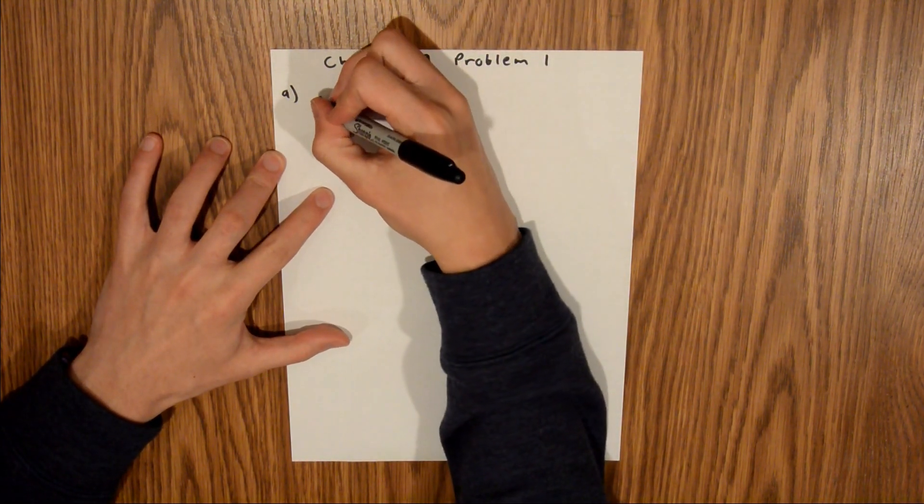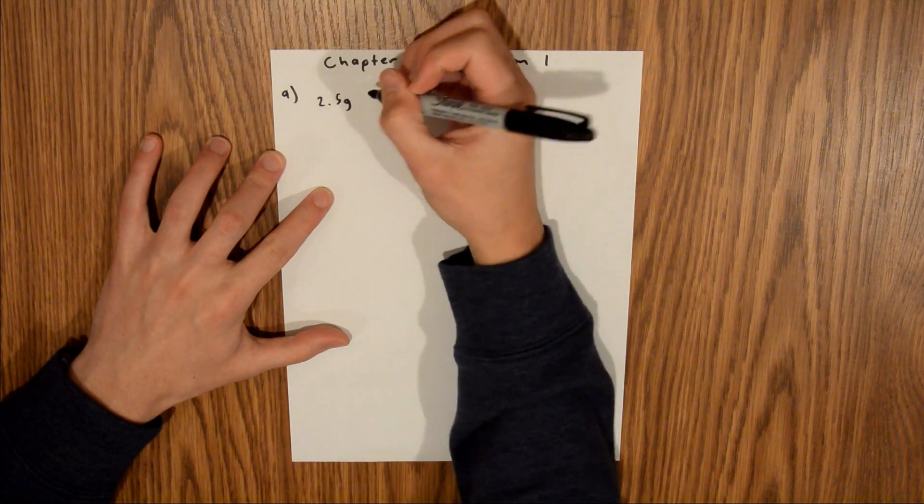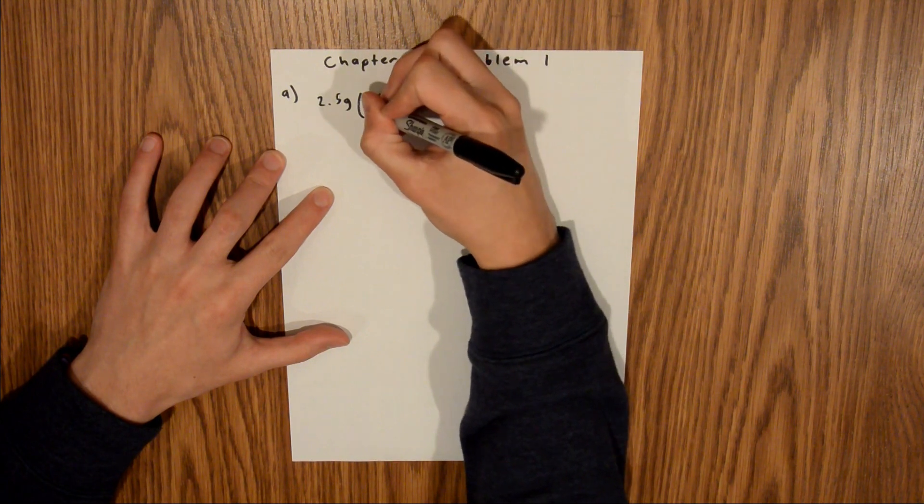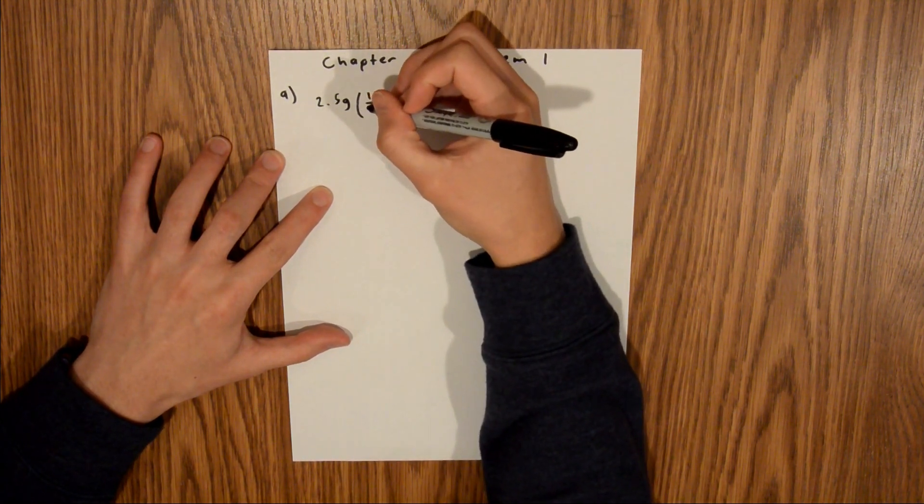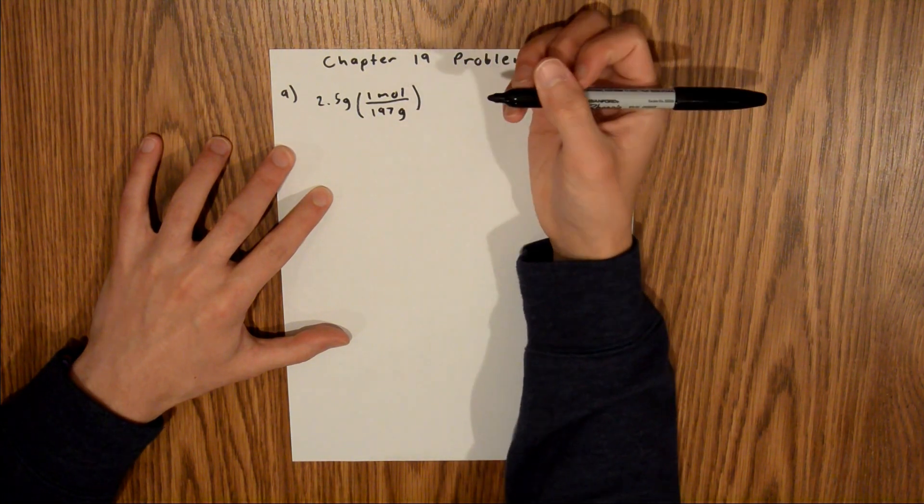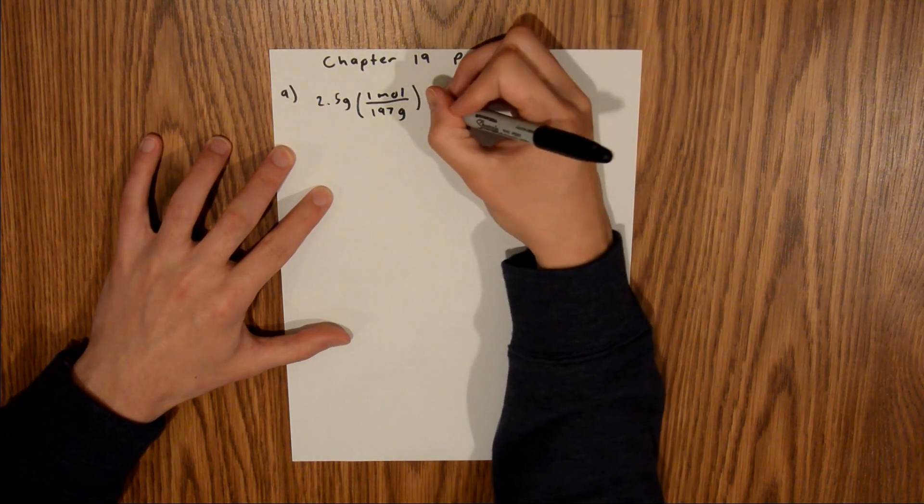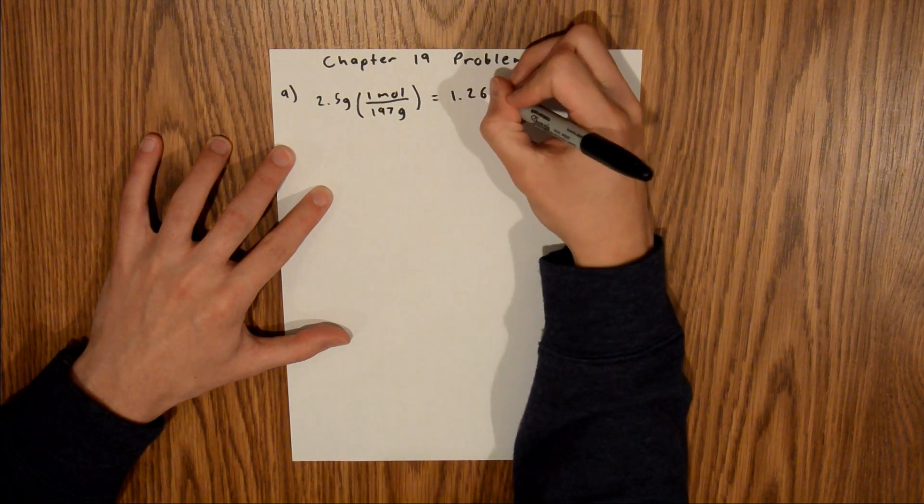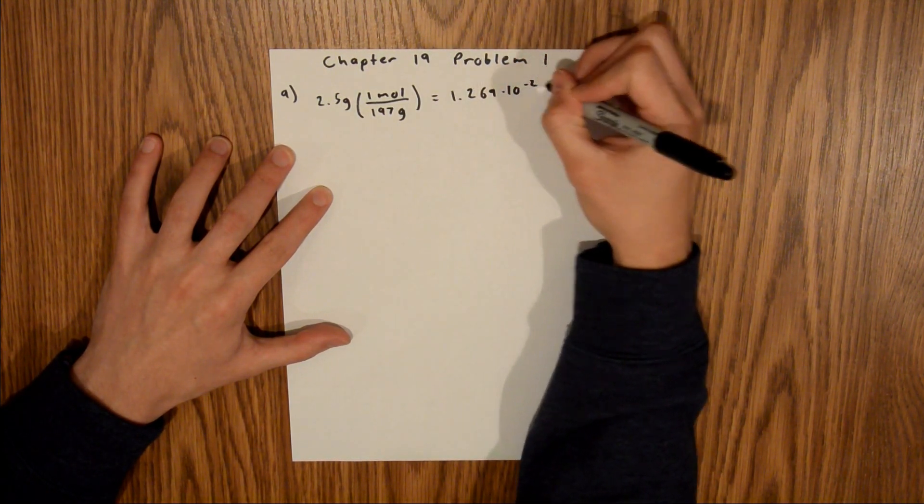And so, we have 2.5 grams of gold, and we know that 1 mole of gold is 197 grams. And so, if you plug that into your calculator, you'll find that this is equal to 1.269 times 10 to the negative 2 moles.